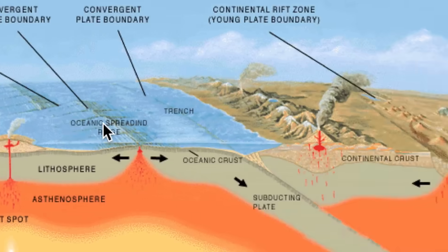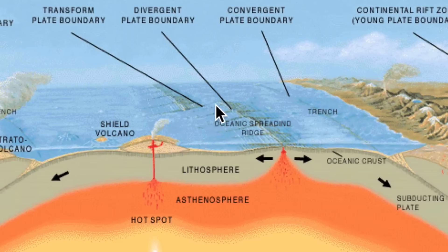We could have transform boundaries. Here would be an example where they are sliding past one another. San Andreas fault is a good example of that.